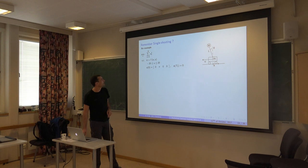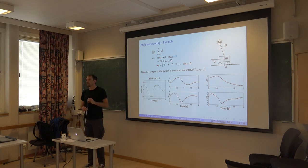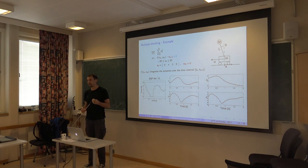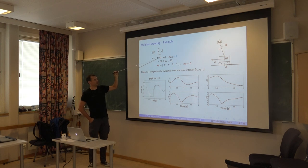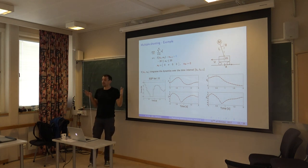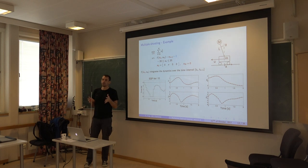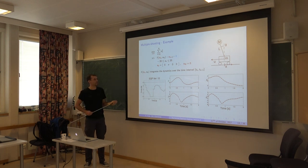How much longer does each iteration take in terms of computational time? The answer is not longer at all — it can actually be faster. Of course you have introduced a lot of constraints in the problem, all these f minus xk+1 constraints, and a lot of variables — all the x's. So the NLP is clearly much bigger. But as you will see, it's much bigger but it's very structured. And you can exploit that in the computer to avoid spending more time solving this larger problem than the single shooting one.